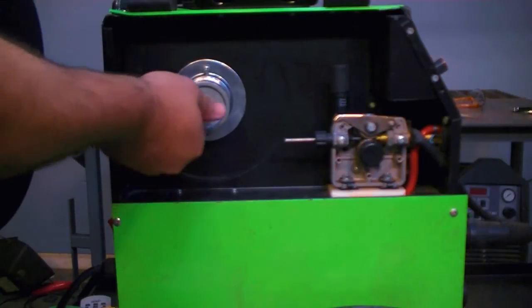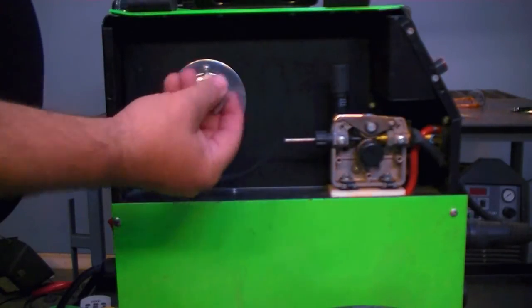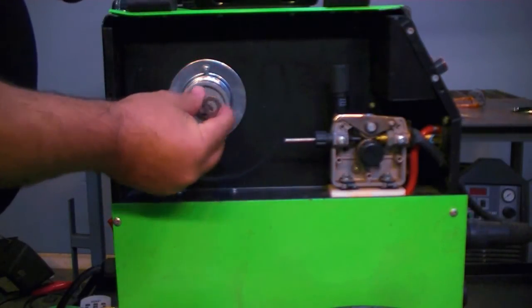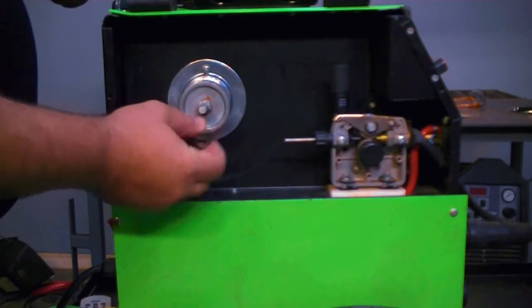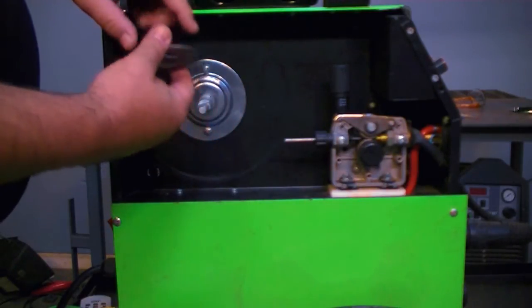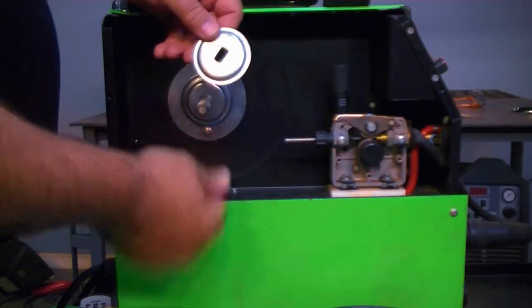This comes apart. You have a wing nut here, you have a washer next, a little spring, and you have a little collar here. It looks kind of like a washer.